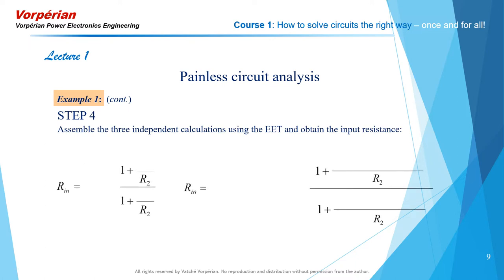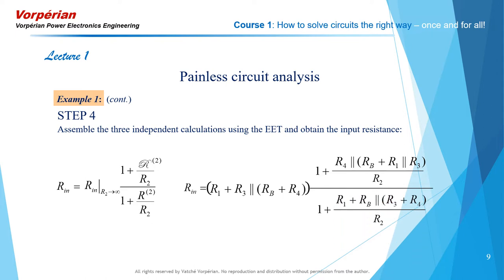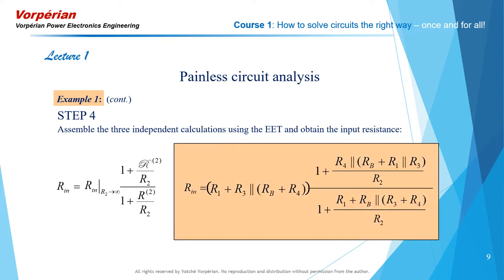Step 4: Here is the structure of the extra element theorem into which we insert our three independent calculations. Here comes the partial credit answer, here comes script R super 2 in the numerator, and here comes Roman R super 2 in the denominator. This is our third analytical answer for the input resistance of the bridge circuit with R2 as a parameter. R2 stands out by itself in this equation and does not appear in any of these three terms, because these three were computed in the absence of R2. As such, this equation is the best form to study the dependence of Rn on R2. Painless, isn't it?